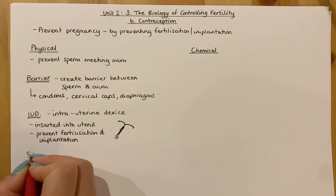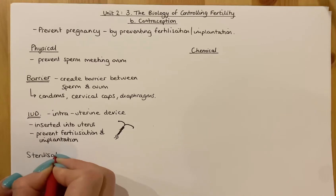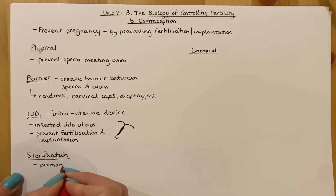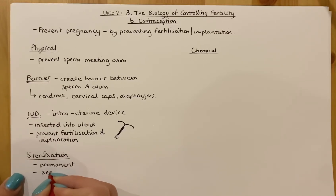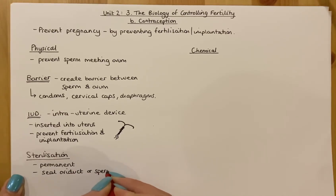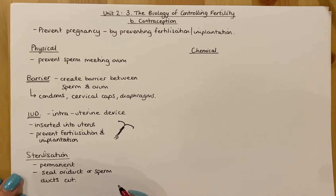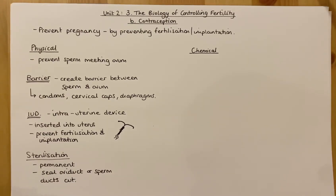The last physical method is sterilization, which is a permanent method — very difficult, almost impossible, to reverse. Either the oviduct of a female is sealed, or the sperm ducts of a male are cut. This prevents the egg from passing down the oviduct to the uterus, and prevents sperm from entering the oviduct — or, if sperm ducts are cut, prevents sperm from being released outside the male's body — and therefore prevents fertilization.